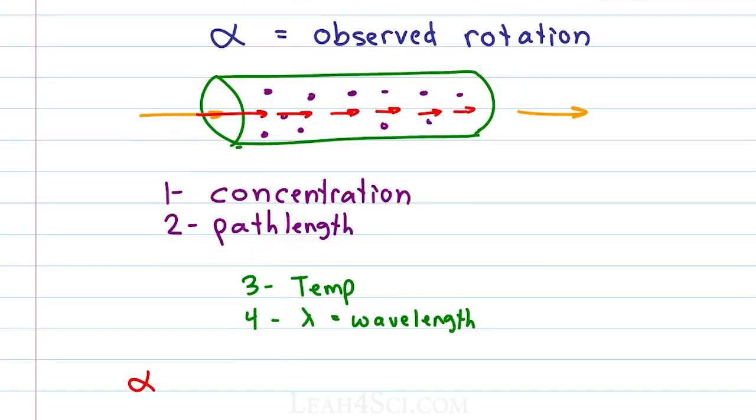Specific rotation is alpha in brackets where the brackets tell us standard rather than just an observed value and it has a very specific set of conditions. That includes a concentration of one gram per milliliter, this is how we measure concentration in a polarimeter and a path length that is equal to one decimeter where if you think of deci as a tenth, it's a tenth of a meter or simply ten centimeters.